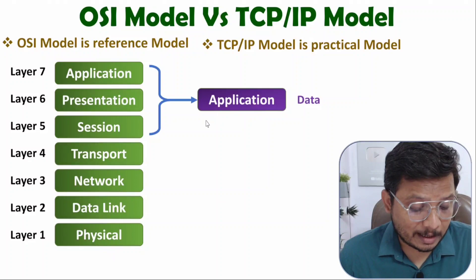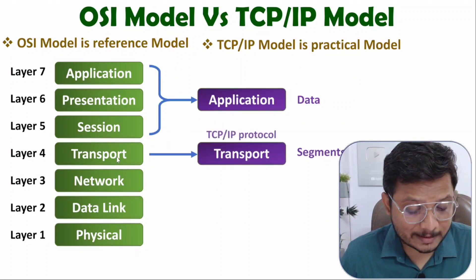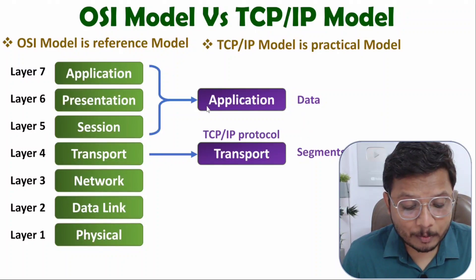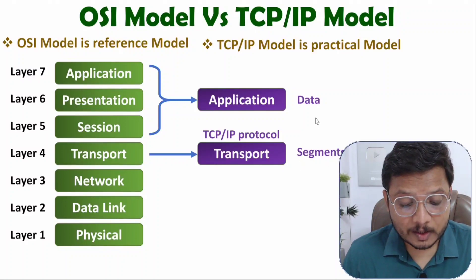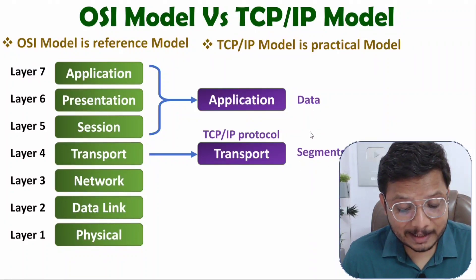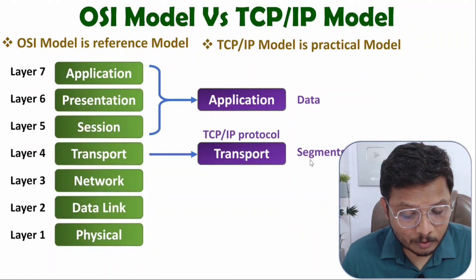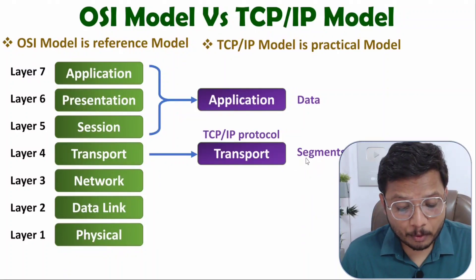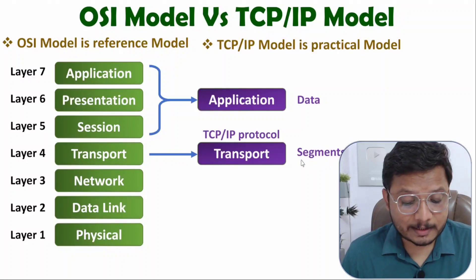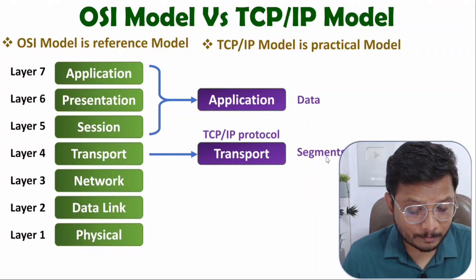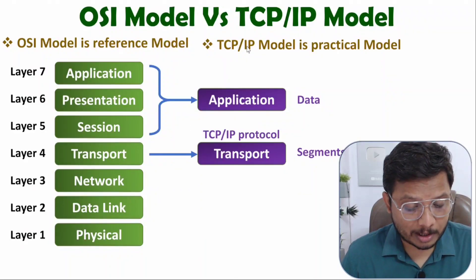The next layer in TCP/IP is the transport layer, which is the same as the OSI transport layer. Here the data output from the application layer is converted into small segments. We give numbering to those segments — sequence numbers — and also assign port numbers to give processes to various segments. So the output of transport layer is segments, same as in OSI model.